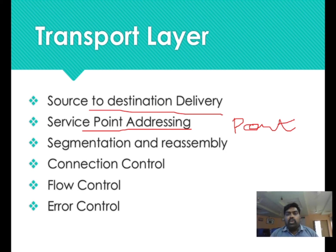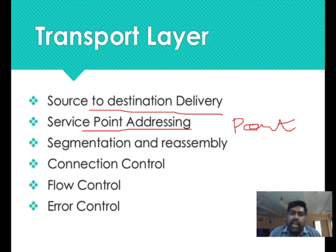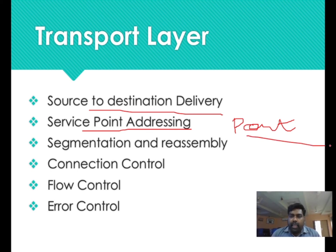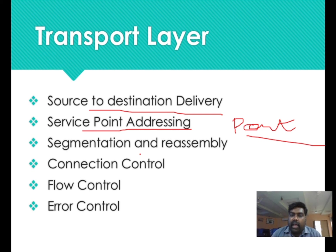That is called the port address. If you say technically, source to destination delivery is here. Even though the network layer also supports source to destination delivery, the transport layer uses port addressing for process to process delivery. This particular transport layer uses the port address. Next important thing is segmentation and reassembly. Because we have a data link layer, you need to implement the framework layer. It also has connection control, flow control, and error control.